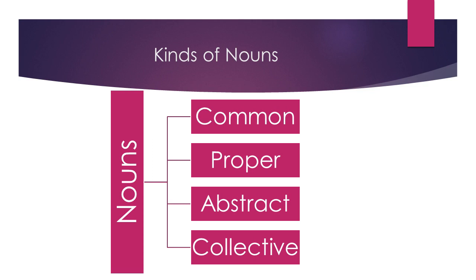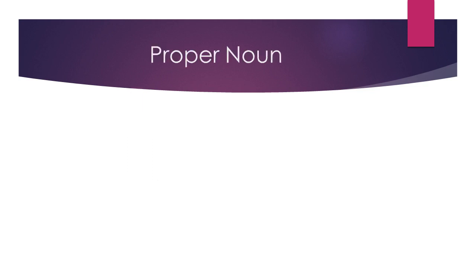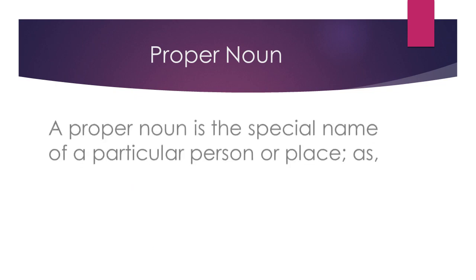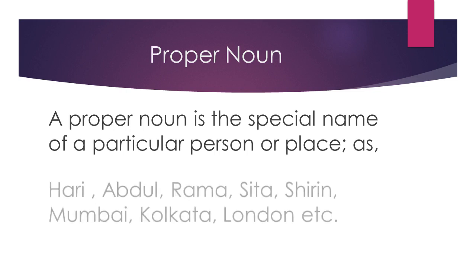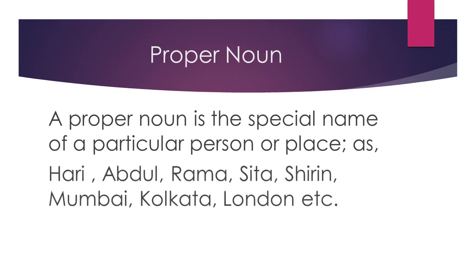I am going to describe each and every noun one by one. Let's begin with the definition of proper noun. A proper noun is the special name of a particular person or place. For example: Hari, Abdul, Rama, Sita, Shireen, Mumbai, Kolkata, London, etc.